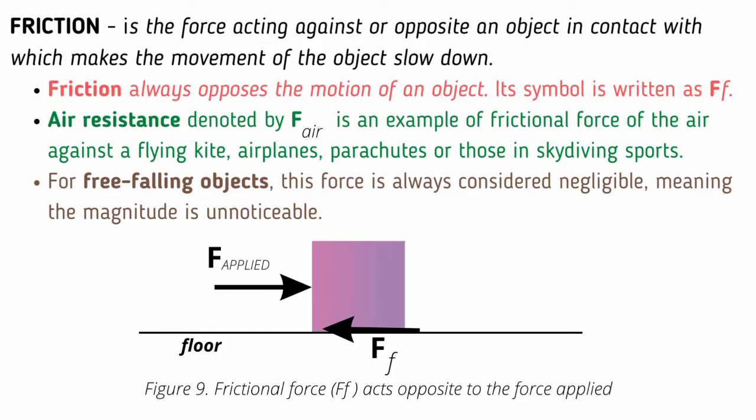Friction is the force acting against or opposite an object in contact with which makes the movement of the object slow down. Friction always opposes the motion of an object. Its symbol is written as FF.